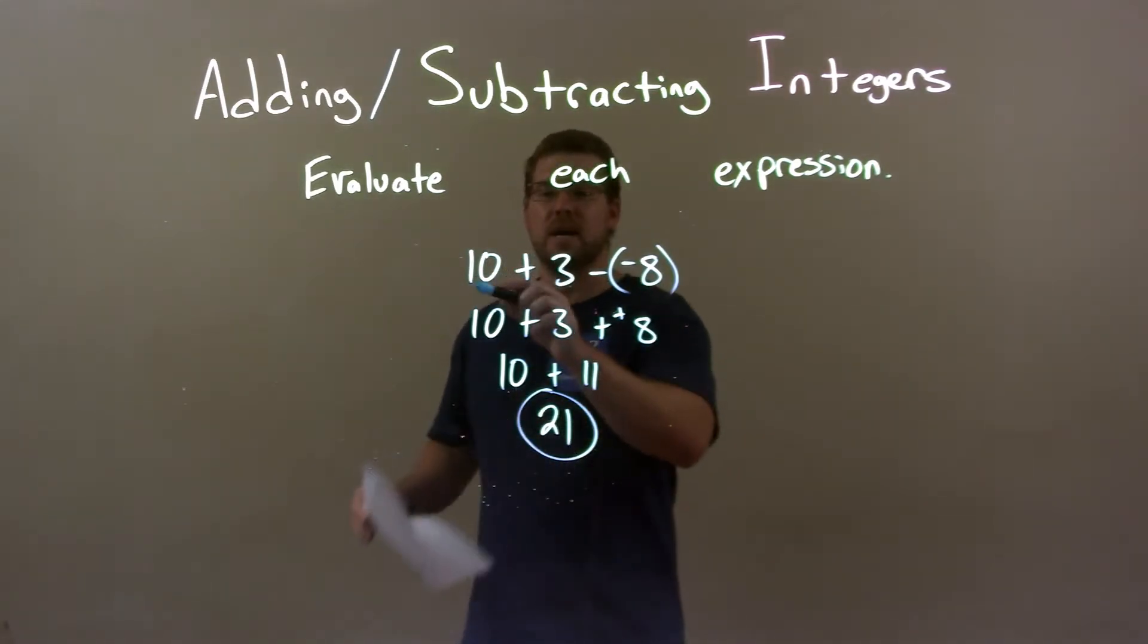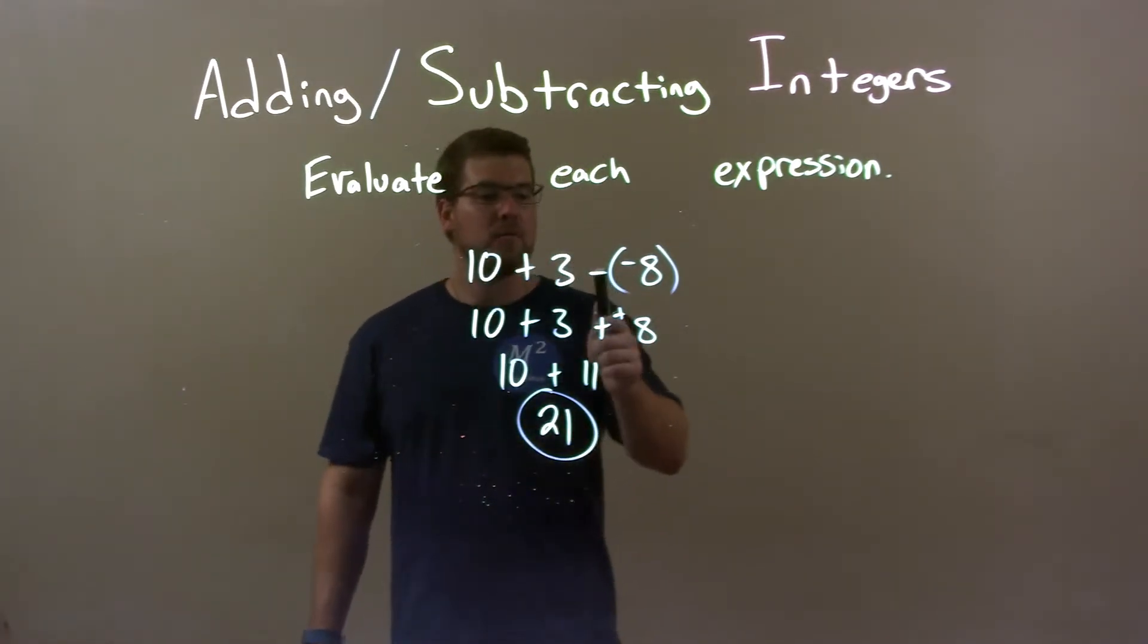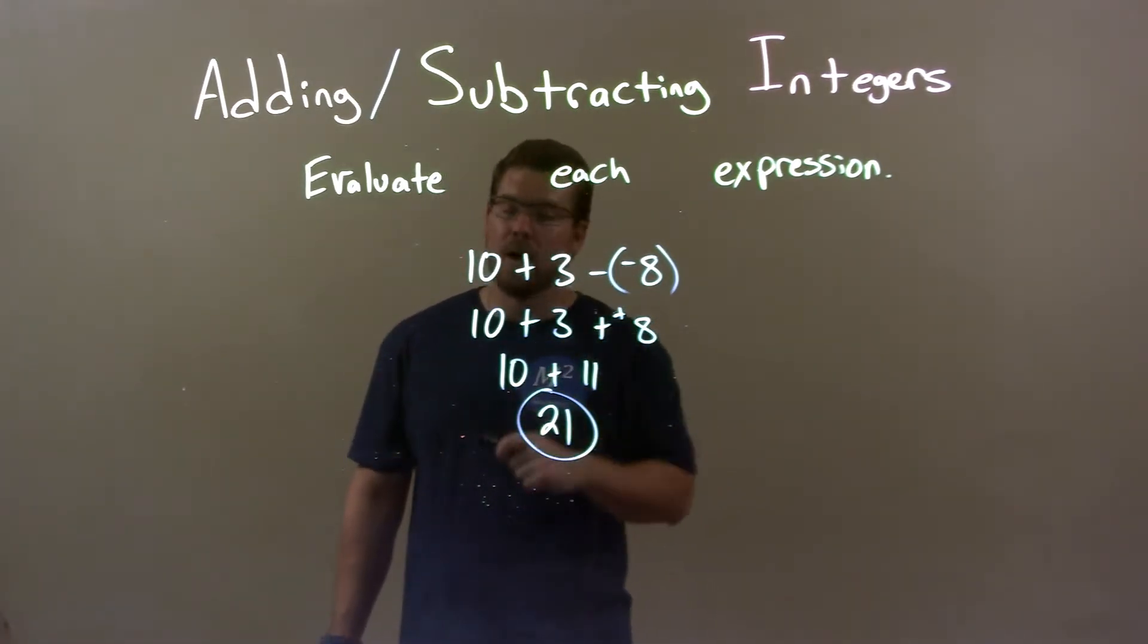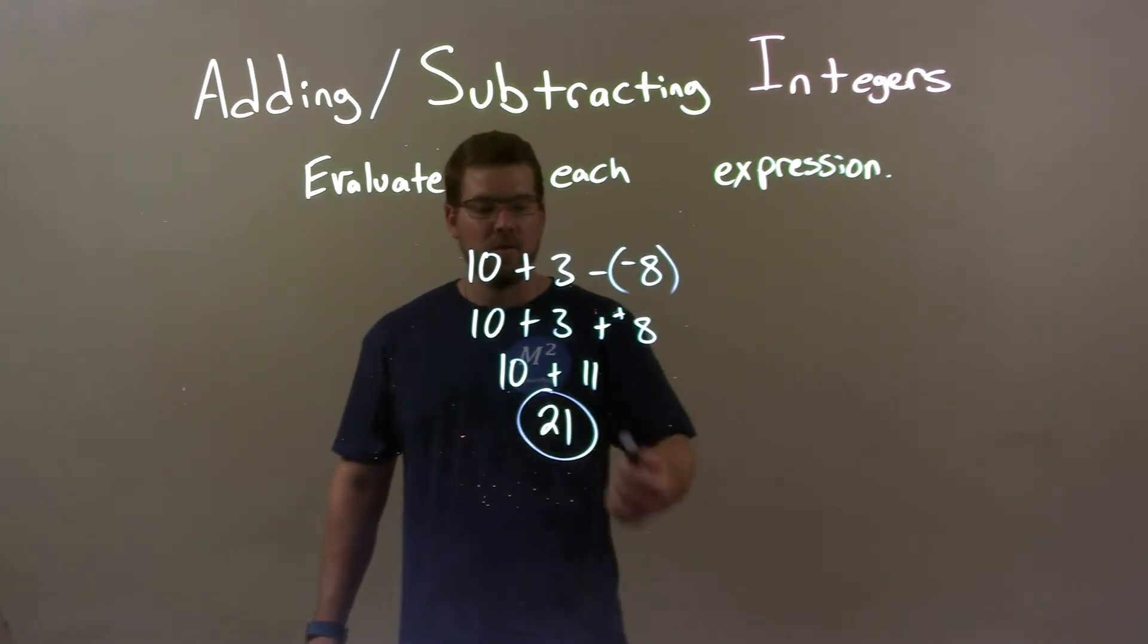Quick recap. We're given 10 plus 3 minus a negative 8, and we evaluate that. Subtracting a negative is the same thing as adding a positive, so we have 10 plus 3 plus 8. 3 plus 8 is 11, and 11 plus 10 is 21. So our final answer is 21.